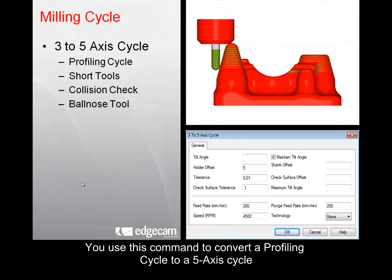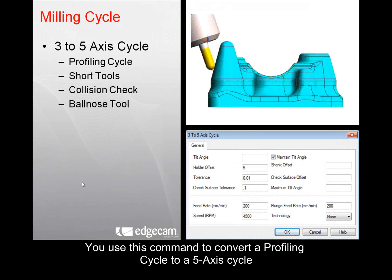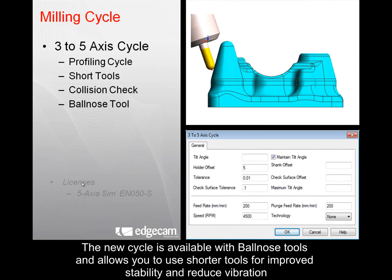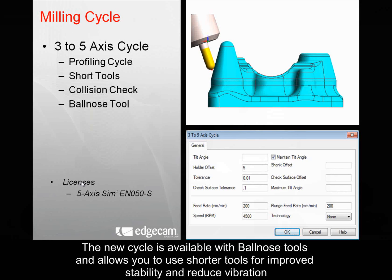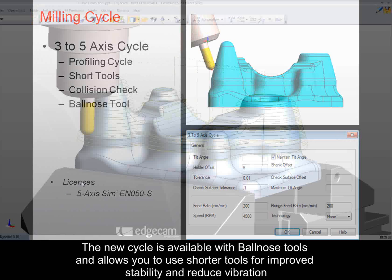You use this command to convert a profiling cycle to a 5-axis cycle. The new cycle is available with ball-nose tools and allows you to use shorter tools for improved stability and reduced vibration.